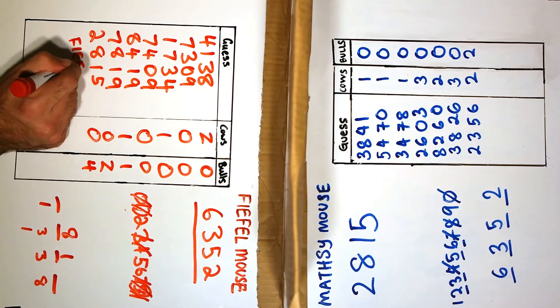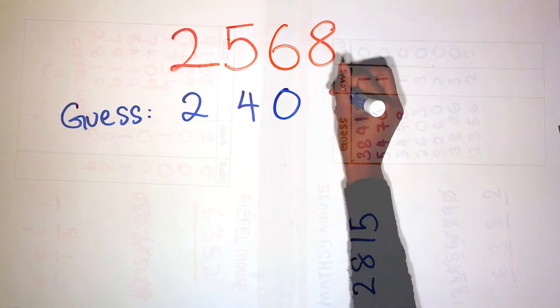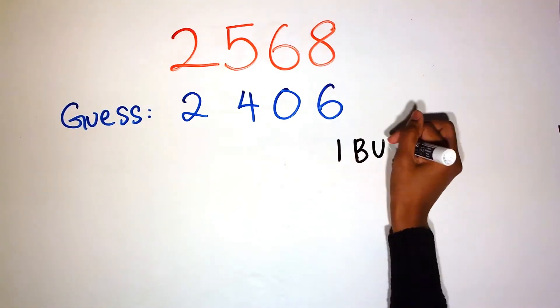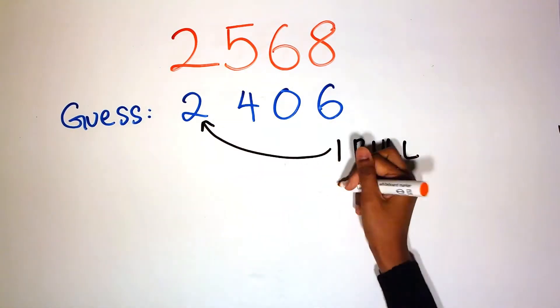Each player takes a turn to guess their opponent's number. After a player makes a guess, the opponent states how many numbers are correct.